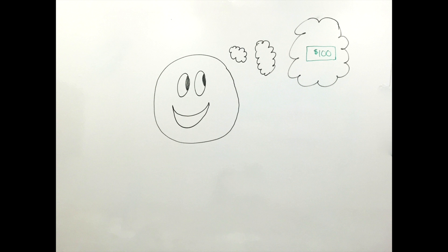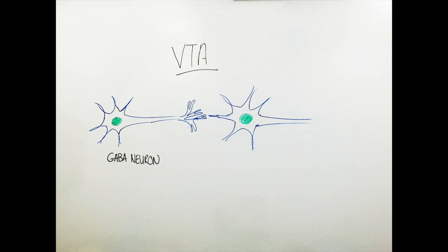When experiencing something enjoyable, the GABA neuron that prevents the signal from continuing is inhibited. When the neuron is inhibited, it can no longer release GABA neurotransmitter onto the next pathway. If there is no GABA being released, the next neuron in the pathway, which is also in the VTA, called the projection neuron, is activated.